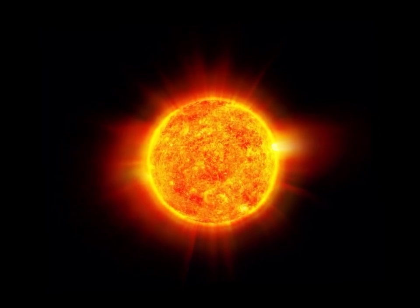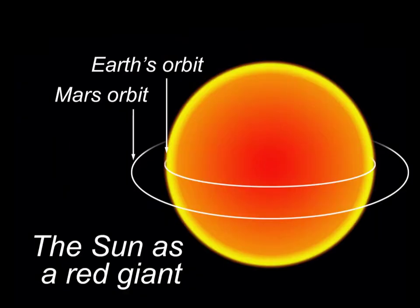For a star the mass of the Sun, this core temperature should be enough to trigger the fusion of the next element up from hydrogen: helium. Helium requires much greater energies in order to fuse. When this new fusion reaction starts, the outer layers of the Sun will be pushed backwards, forming a red giant. The red giant that the Sun would form should have a radius very similar to that of Earth's current orbit, which is not very good for us.